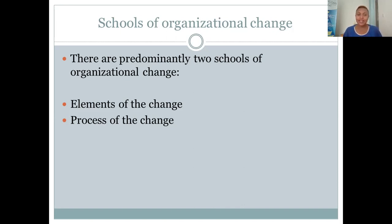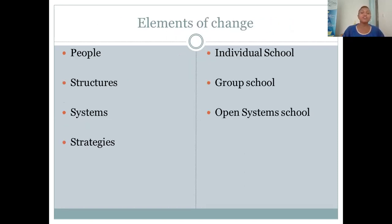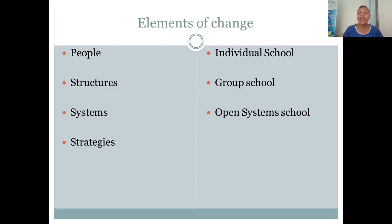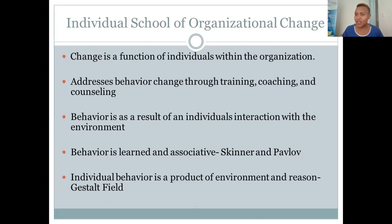For this class, we're going to be learning about the elements of the change, and specifically the individual school of organizational change. The elements of change could be people, structure, systems, strategies, shared values — the components that make change successful or unsuccessful. The three schools of change in that dimension include the individual school, the group school, and the open system school of organizational change.